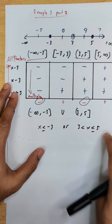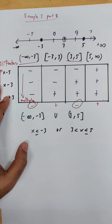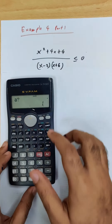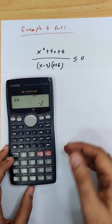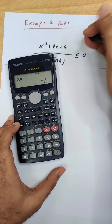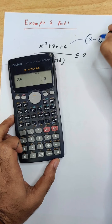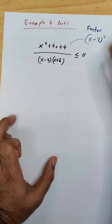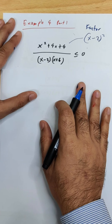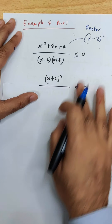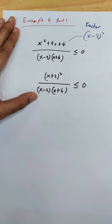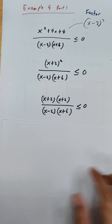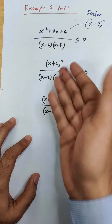For the fourth example, we again have a quadratic not yet in factorized form. Using the calculator, many students find x minus 2 and stop, thinking there's only one factor. But for a quadratic you need two factors — it's actually x minus 2 squared. If you expand it out, you get four factors total including the repeated one, and writing it as a squared factor is important for setting up the table correctly.